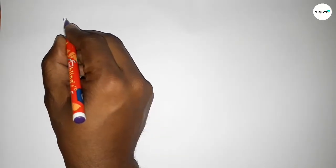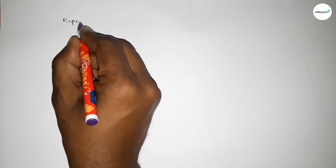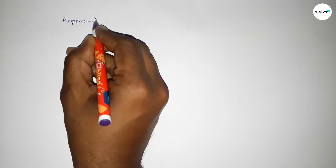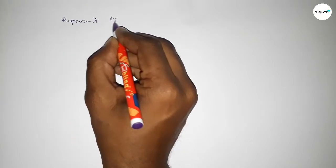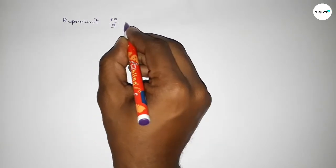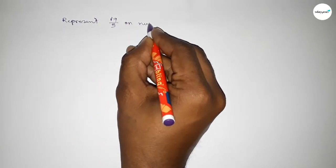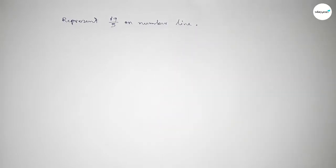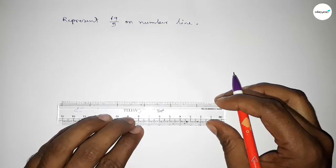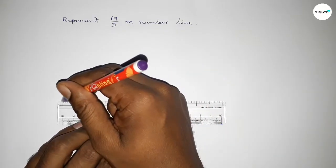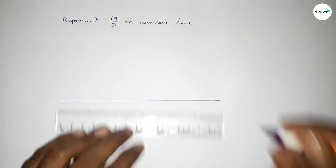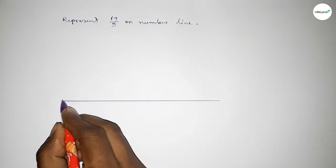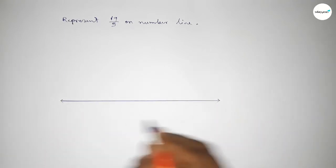Hi everyone, welcome to Essay Share Classes. Today in this video we have to represent 19 over 5 on a number line. So let's start the video. First of all, we have to draw the number line.